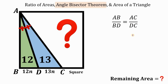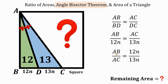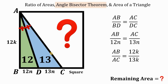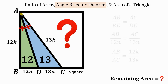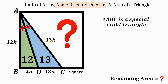Using the angle bisector theorem again: AB/BD = AC/DC, giving AB/12n = AC/13n. Rearranging: AB/AC = 12n/13n = 12/13. Therefore we can write AB = 12k and AC = 13k, using a different real number k to represent these segments. Triangle ABC is a special right triangle with hypotenuse 13k and one leg 12k.